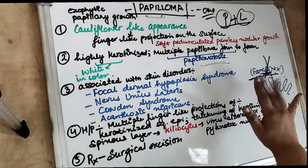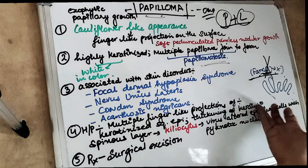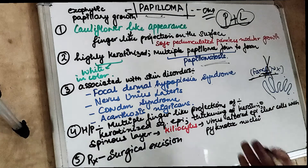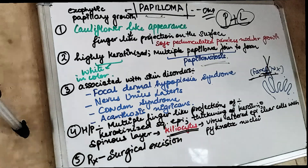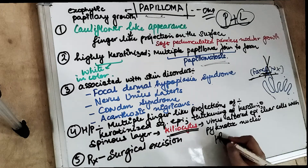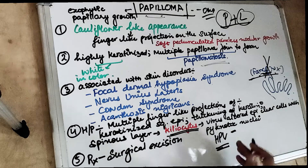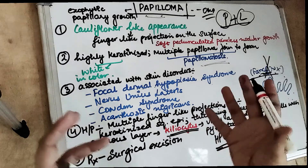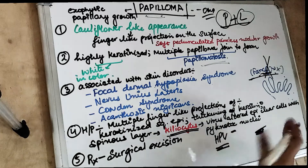The histopathological features include multiple finger-like projections. Clinically, these projections are soft. Keratinized squamous epithelium is present with thickening of keratin — this is why papilloma is white in color. In the spinous layer of the epithelium, you will also see koilocytes, which are clear epithelial cells with a pyknotic nucleus. These are virus-altered cells due to HPV. When HPV invades epithelial cells, these clear cells with a pyknotic — very dark, condensed chromatin — nucleus are produced. A pyknotic nucleus is usually seen in necrosis or apoptosis when the cell is dying.